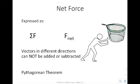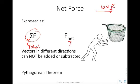Net force is represented in two ways: the Greek letter sigma (Σ), which stands for summation or total force, or as F with a subscript "net" — both represent the net force. Vectors in different directions cannot be added or subtracted. You can't take 10 newtons to the right and 5 newtons down and add them together because they're not going in the same direction. If you were to combine these forces somehow, you would have to use the Pythagorean theorem: a² + b² = c².